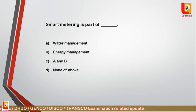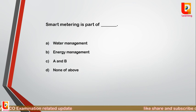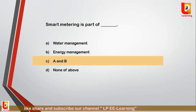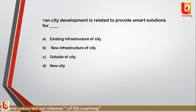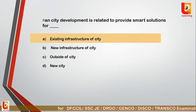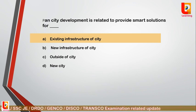Question 25: Smart metering is a part of — option A: water management; option B: energy management; option C: A and B; option D: none of the above. Correct answer is option C: smart metering is a part of both water management and energy management. Question 26: Pan city development is related to providing smart solutions for — option A: existing infrastructure of the city; option B: new infrastructure of the city; option C: outside of the city; option D: new city. Correct answer is option A: existing infrastructure of the city.